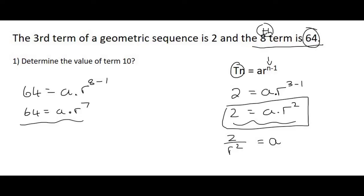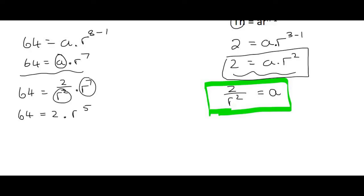Then what I'm going to do is use that expression in the other formula. So wherever I see an A, I'm going to replace it. So I'm going to replace it with 2 over R squared. Easy as that. And then here we have R7. Now this R7 and this R2, or R to the power of 7 and R to the power of 2, if they simplify, they become R to the power of 5. And now it's just a matter of solving.